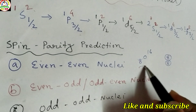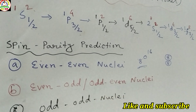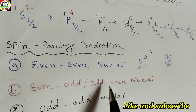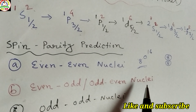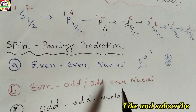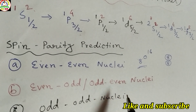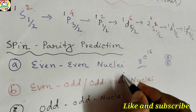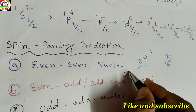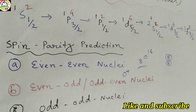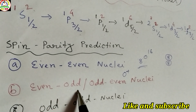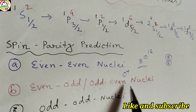For even-even nuclei, there are no unpaired nucleons, thus the parity is positive and the angular momentum is zero. So the spin parity is 0+. For even-odd nuclei or odd-even nuclei, the angular momentum is decided by the last unpaired nucleon.